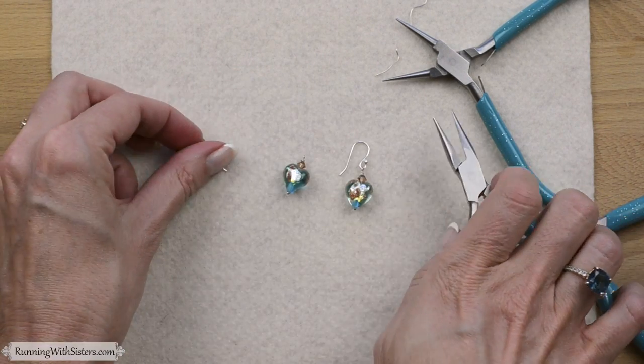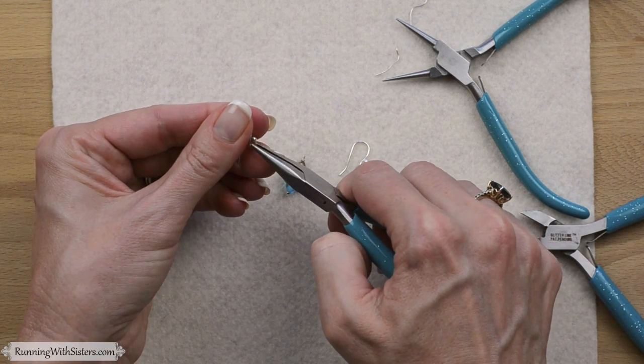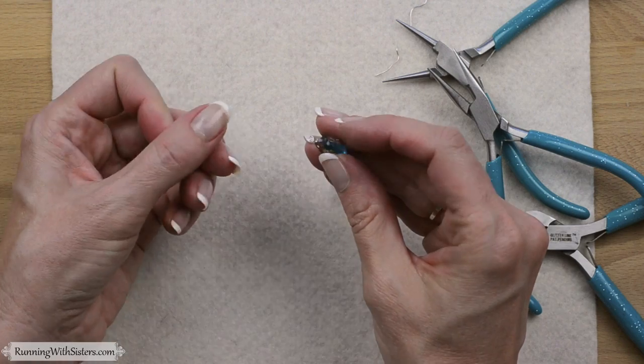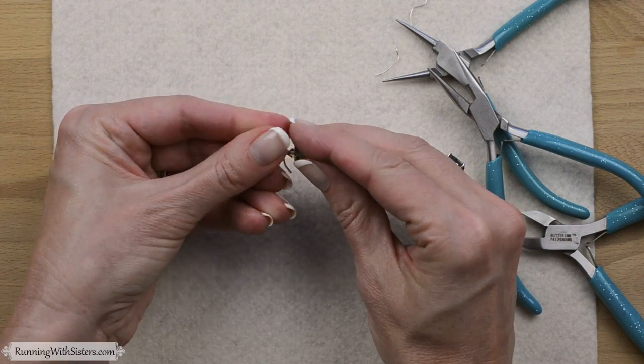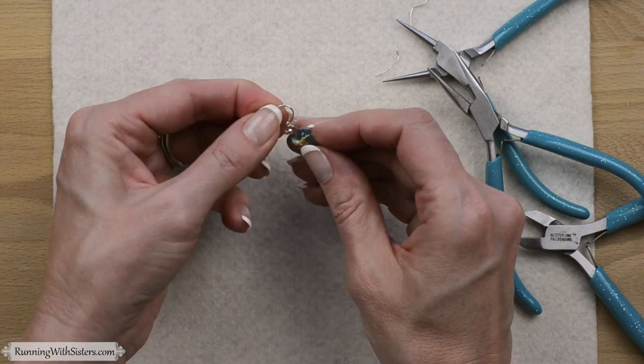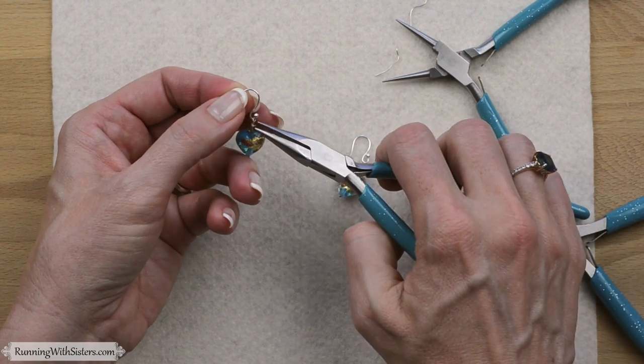And that's how you put anything onto an earring wire. You just open up the little loopy part at the bottom and then slide your item on, whatever it is. It could be a chain or a component like this. Then put it in the nook, and then all you have to do is close that loop up.